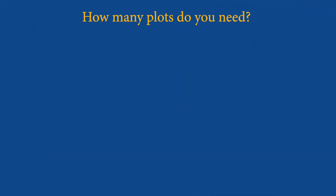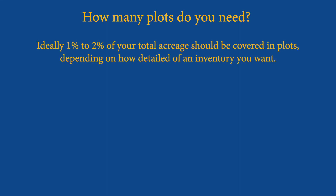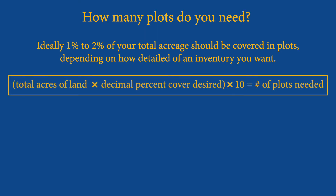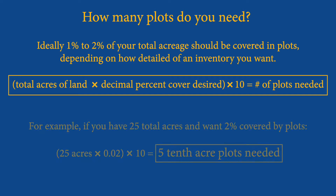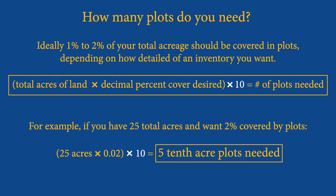When installing plots to inventory trees, it's important to consider not only their location but also the area you're covering with your plots. Installing enough plots to cover one to two percent of your acreage is typically adequate for a basic inventory. To determine how much area you need covered by plots, multiply your total forest acreage by the decimal percent you want to sample. To find the number of tenth-acre plots needed, multiply this acreage amount by 10.